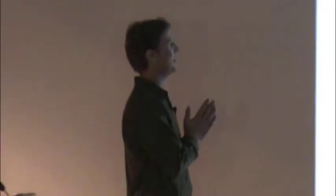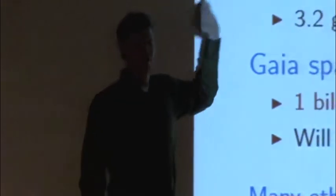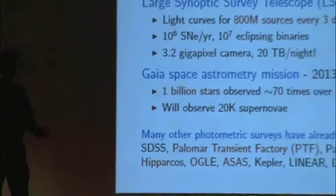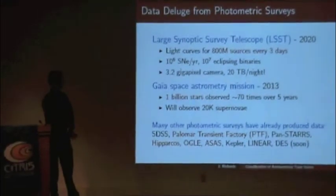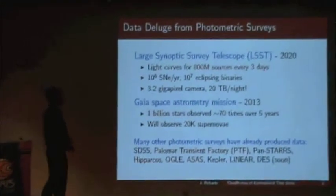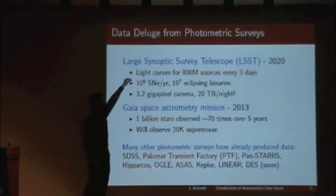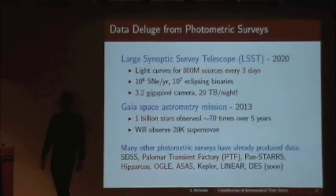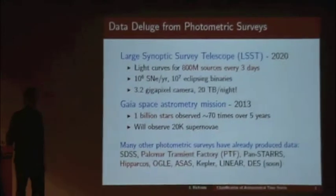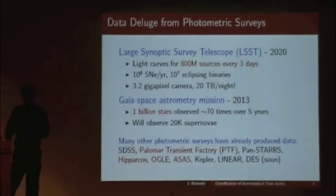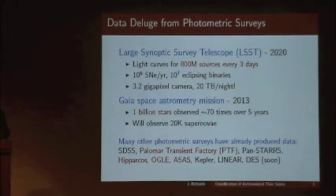The big headliner telescope is the Large Synoptic Survey Telescope, or LSST, which is coming at the end of the decade. LSST will basically put a new point on the light curve of 800 million objects every three days — so every three days it will scan the entire sky. We're not streaming in the second range, but every three days we get a new measurement for 800 million objects.